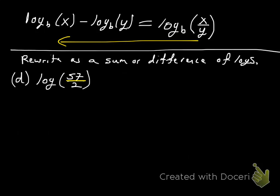So log of 57 over 2, you see the division. So we're going to use the quotient rule and we're going to rewrite that as log of 57 minus log 2.